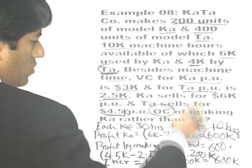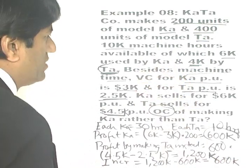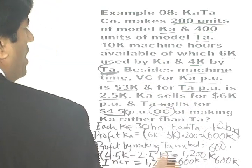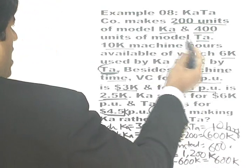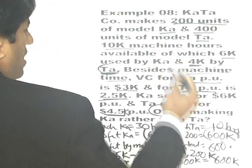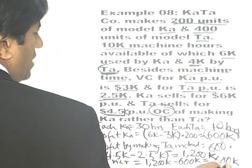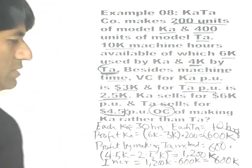Whatever reason they are producing Ka instead of Ta, it is costing them $600,000 in opportunity cost.